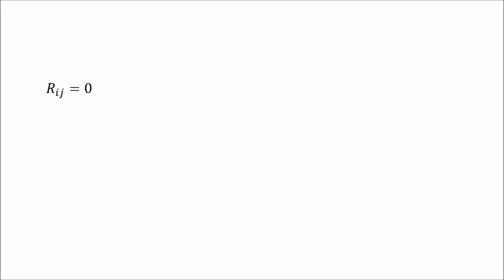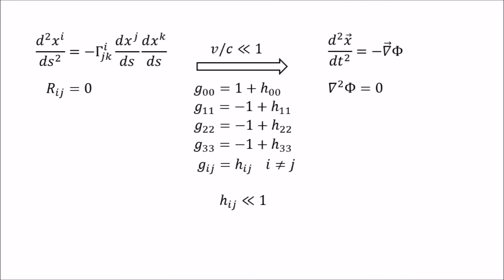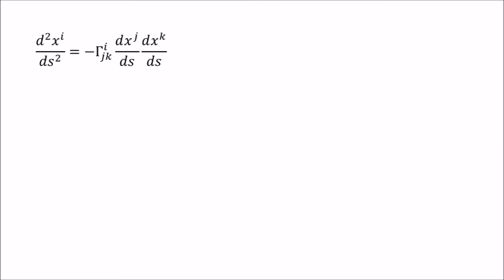The first thing we want to see is whether this equation, together with the geodesic equation, reduces to Newton's theory of gravitation in a limit of small velocities compared to the speed of light and weak fields. What I mean by weak field is that the metric is close to the flat spacetime metric. To make our lives a little easier, let us also assume that the field is not changing with time.